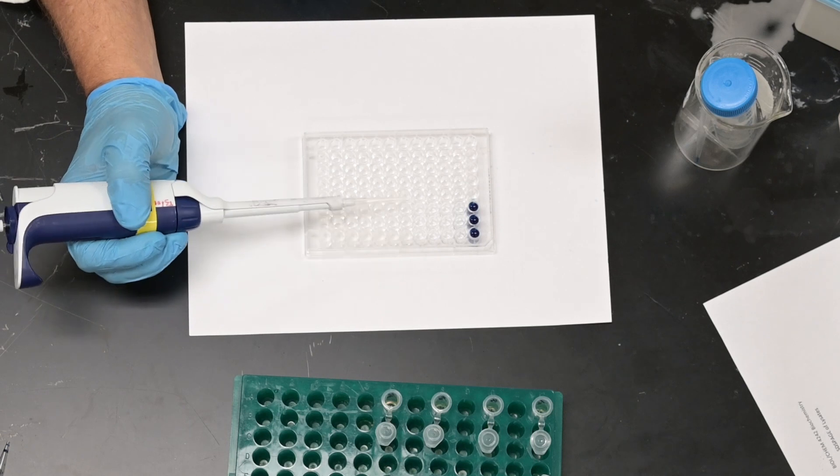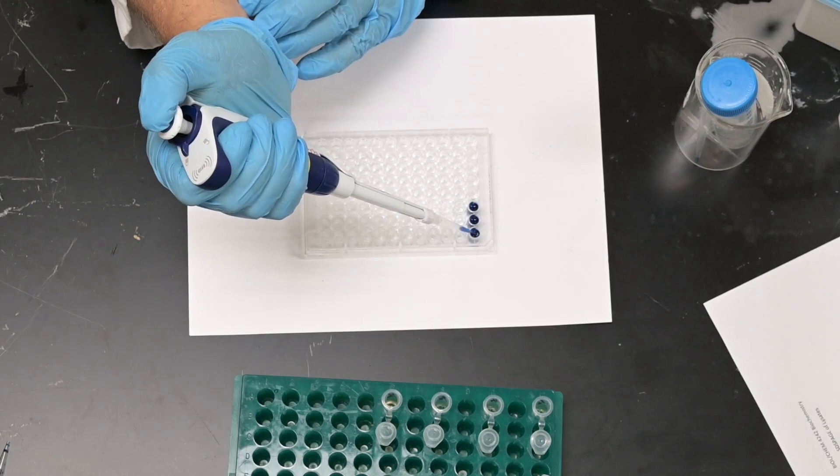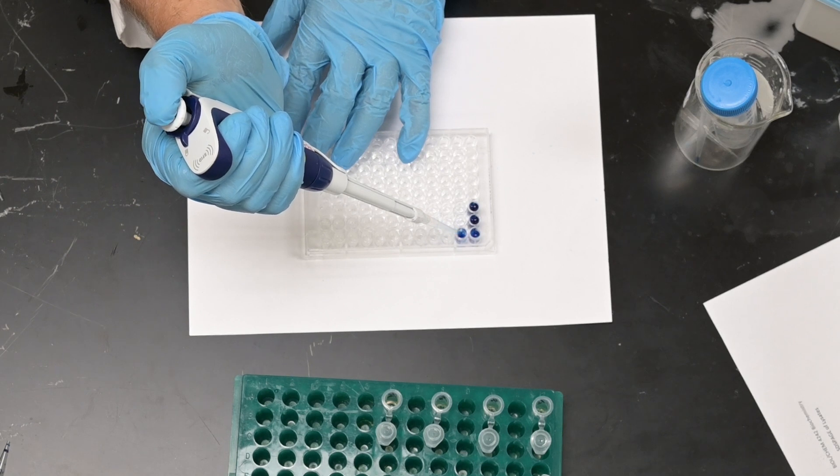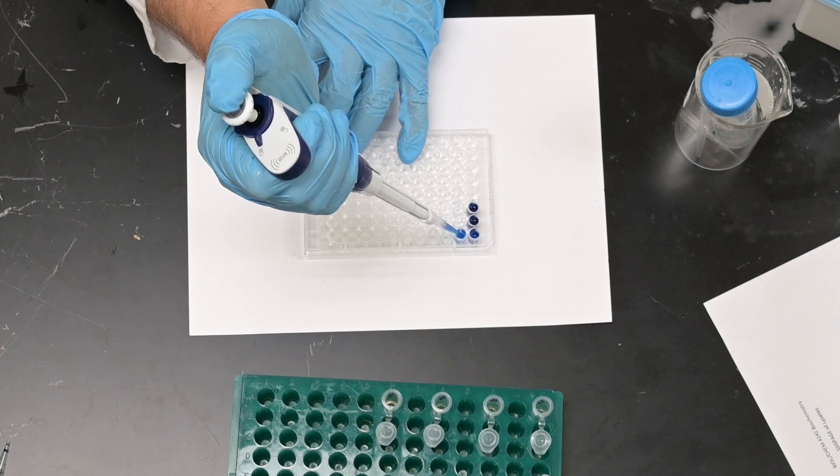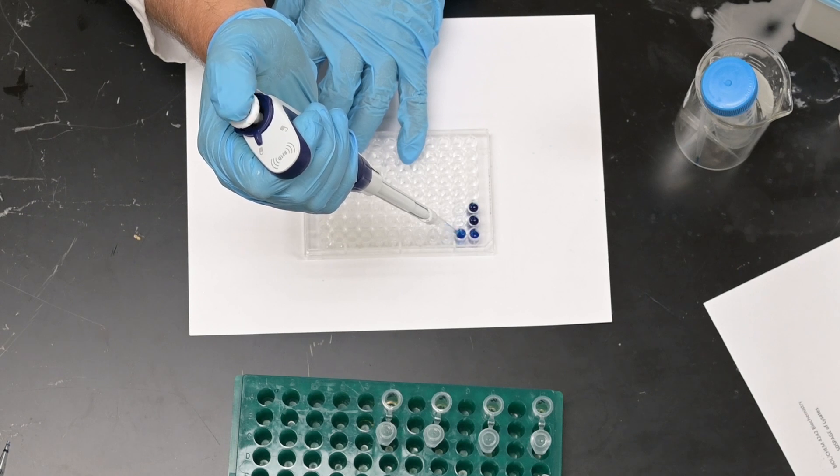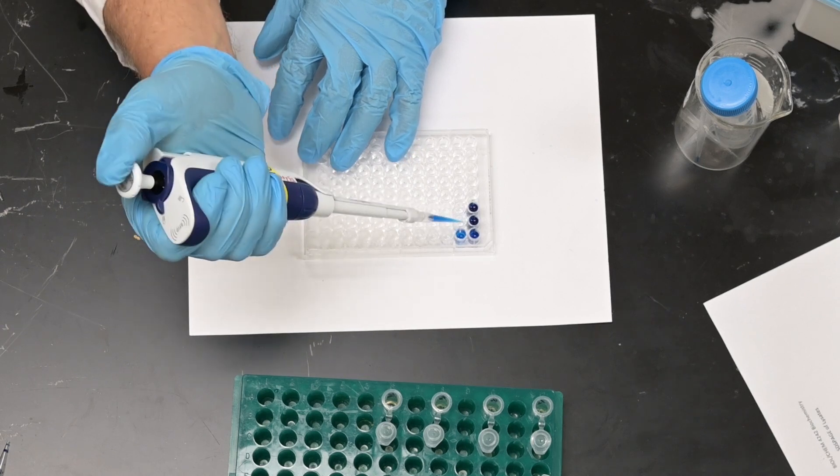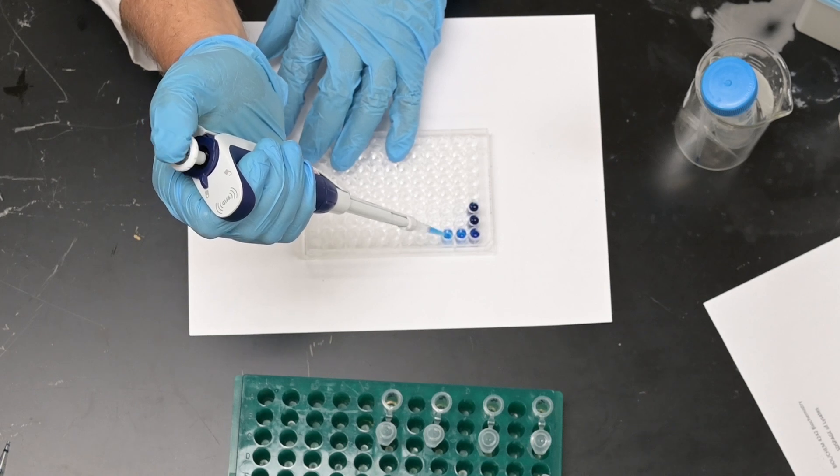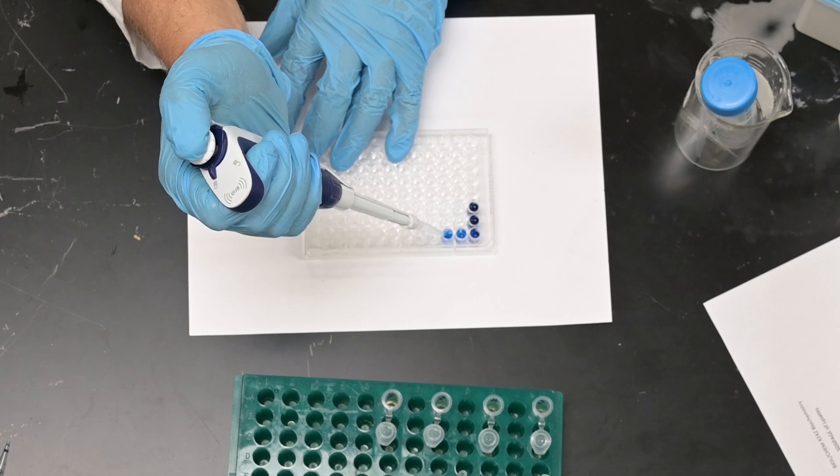We'll take 150 microliters out of A1 and add that to A2. I'll mix by pipetting up and down, and what I'm doing, since it's a colored solution, I'm actually looking to make sure it looks like it's mixed in the well. After I mixed it, I'll take 150 microliters out of A2 and add it to A3, and I'll pipet up and down. What I'm doing is I have the tip almost to the very bottom of the well so that I won't be sucking up any air.